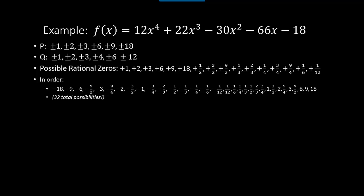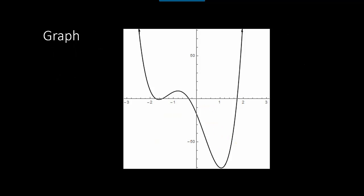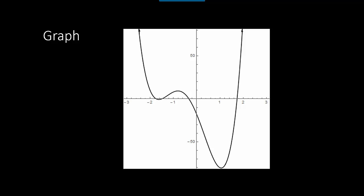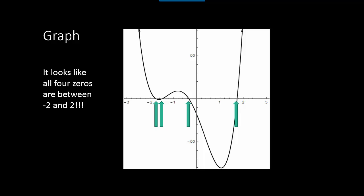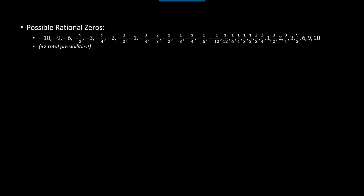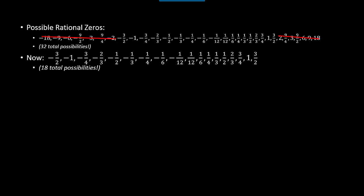I have the 32 possibilities listed in order from least to greatest, and our goal is to narrow this list down. Looking at a graph of the function — using a graphing calculator or Desmos — we can clearly see four x-intercepts, meaning four real zeros. All of those x-intercepts are between −2 and 2, so if we remove anything outside that range we go from 32 possibilities all the way down to 18.